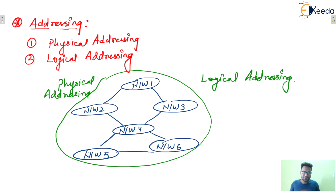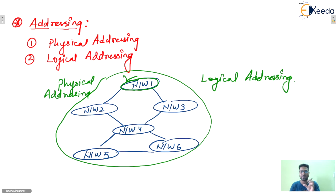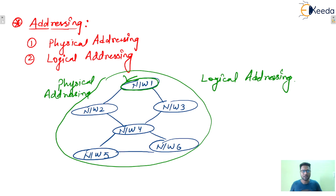Inside network 1, every host must have a different physical address. So physical addressing or physical address is unique locally — locally means inside one network. Logical addressing means this address is unique globally, meaning the entire world. In the entire world, the logical address must be unique.